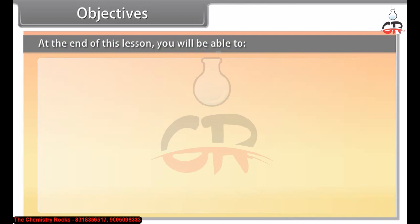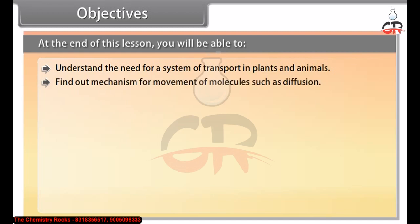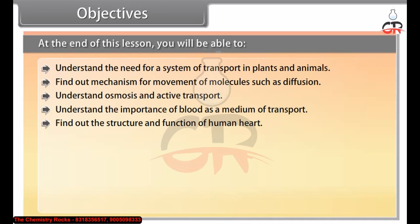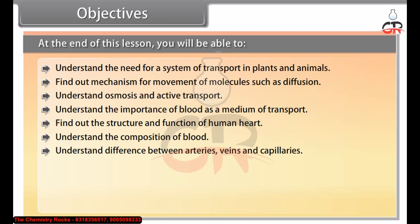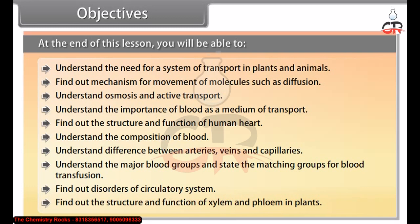At the end of this lesson, you will be able to: understand the need for a transport system in plants and animals; find out mechanisms for movement of molecules such as diffusion; understand osmosis and active transport; understand the importance of blood as a medium of transport; find out the structure and function of the human heart; understand the composition of blood; understand the difference between arteries, veins and capillaries; understand the major blood groups and matching groups for blood transfusion; find out disorders of the circulatory system; and find out the structure and function of xylem and phloem in plants.